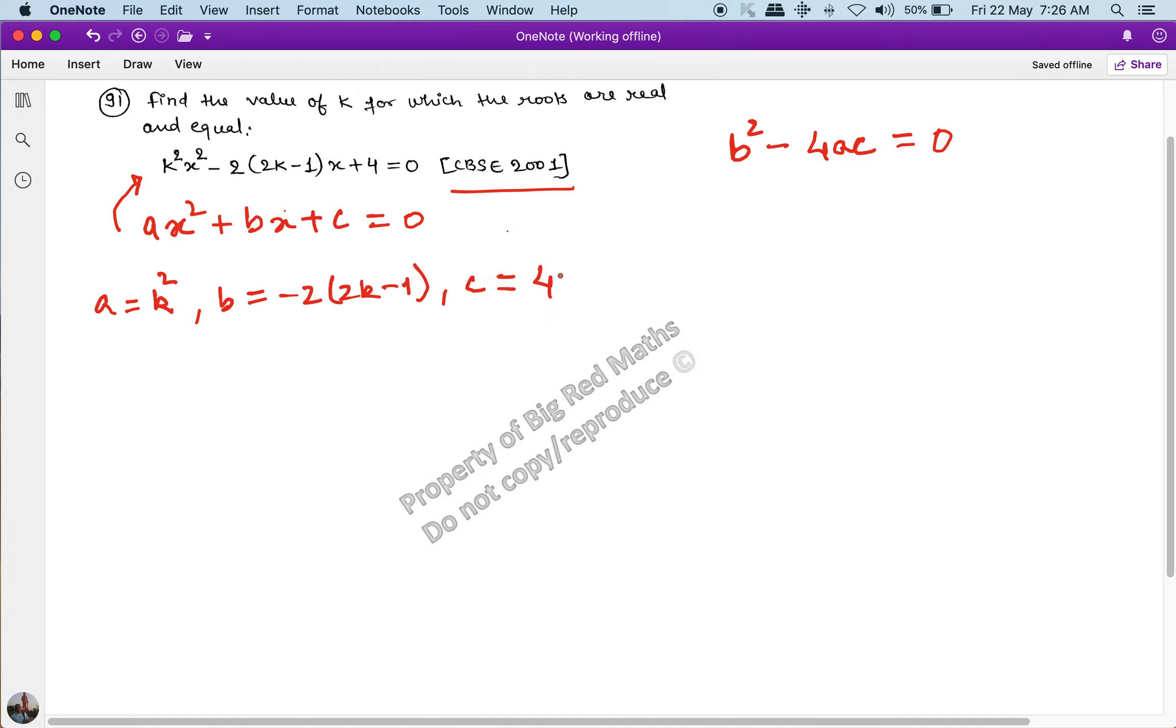Substituting these values, we get: b² becomes 4(2k - 1)² minus 4 times k² times 4, which should equal 0. This becomes 4[4k² - 4k + 1] - 16k² = 0.